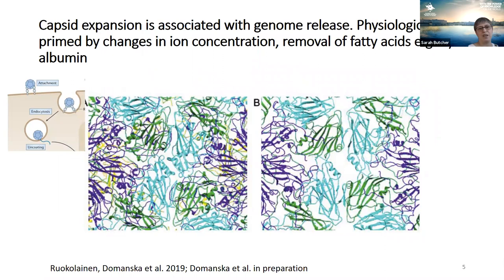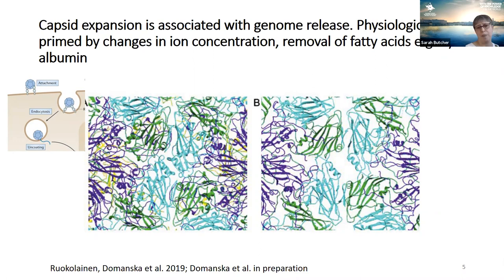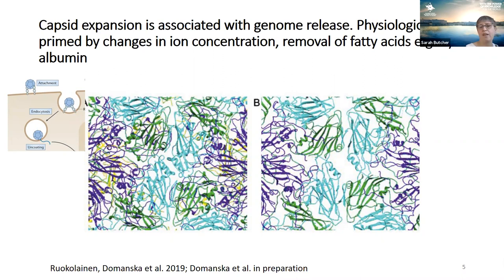So what else can we target? One of the things to think about is the uncoating of the genome. It's been known for many years for enteroviruses that if you heat them to 50 degrees or put them into extreme non-physiological conditions, they will release the genome. When infectious, the particles are in a compact form; as they get ready to release the RNA, they expand, the capsid rotates, and pores are formed — for instance at the two-fold axis where the RNA can come out, and also at the three-fold.